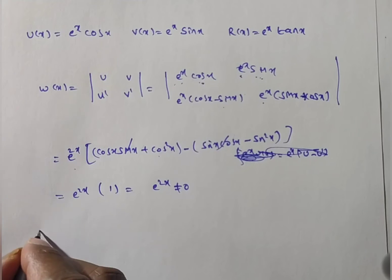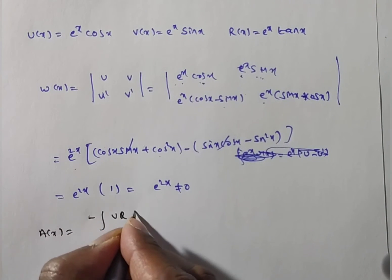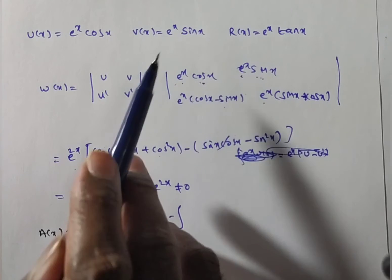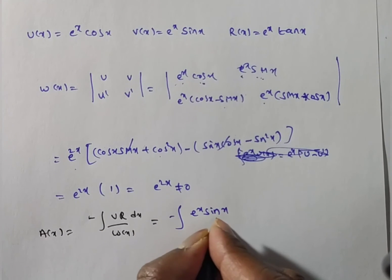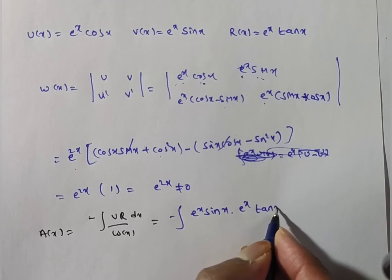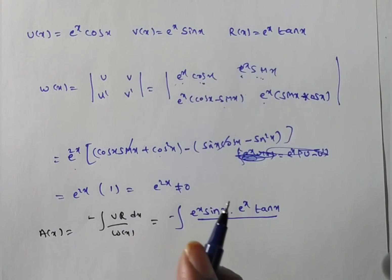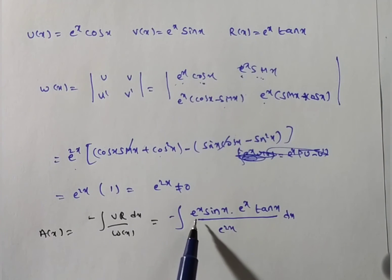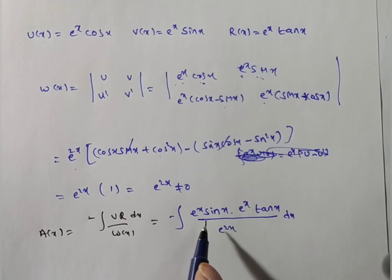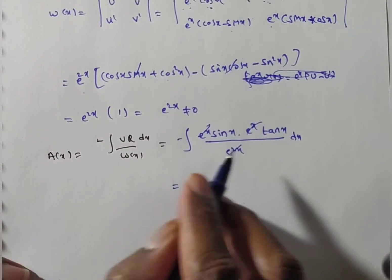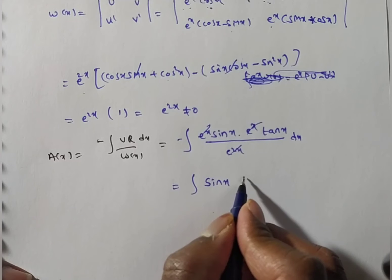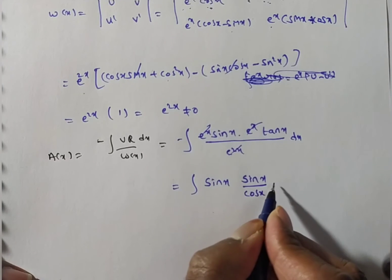Finding a(x): a(x) = -∫(v·R / W(x)) dx = -∫(e^x·sin(x) · e^x·tan(x) / e^(2x)) dx. The e^(2x) terms in numerator and denominator cancel, leaving -∫ sin(x)·tan(x) dx. Writing tan(x) = sin(x)/cos(x), the integrand becomes -∫ sin²(x)/cos(x) dx.